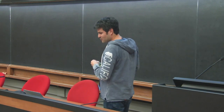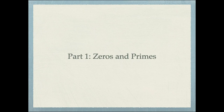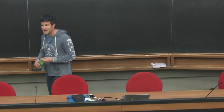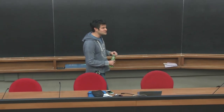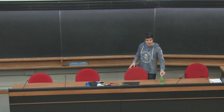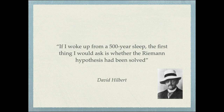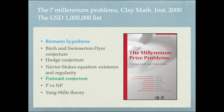Part one of the lecture today is called Zeros and Primes. I want to refresh your memory about the Riemann hypothesis. My last basic notion seminar here was about the Riemann hypothesis, so I want to start today where I left off. One of my favorite quotes by mathematicians is this one by David Hilbert: 'If I woke up from a 500-year sleep, the first thing that I would ask is whether the Riemann hypothesis had been solved.' As you know, the Riemann hypothesis appeared in this famous list of Millennium Problems offered by the Clay Mathematics Institute. It's worth a million dollars if you can solve it — a nice business opportunity I promised to you.